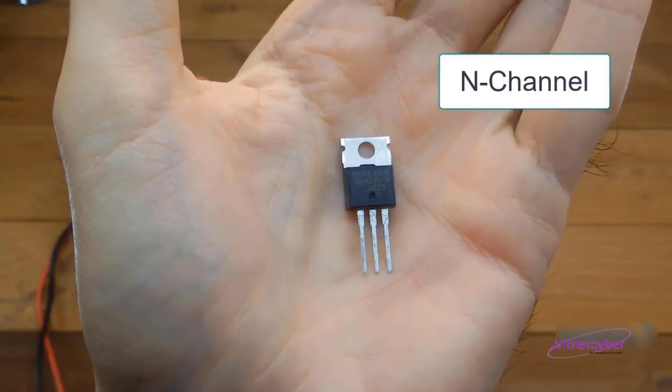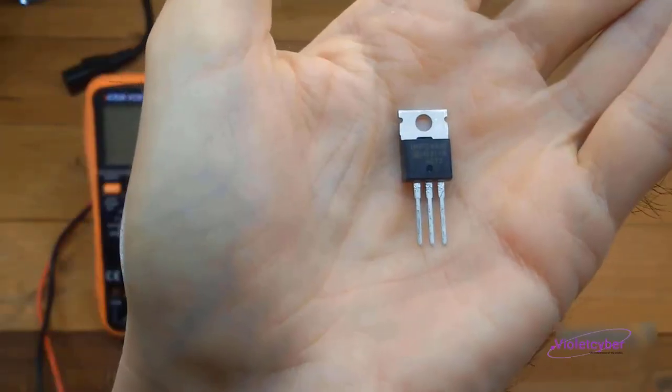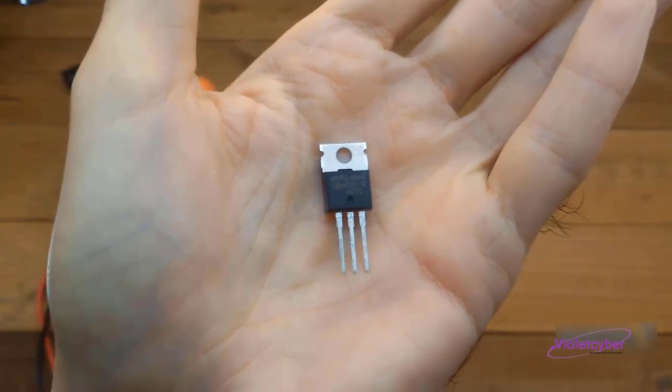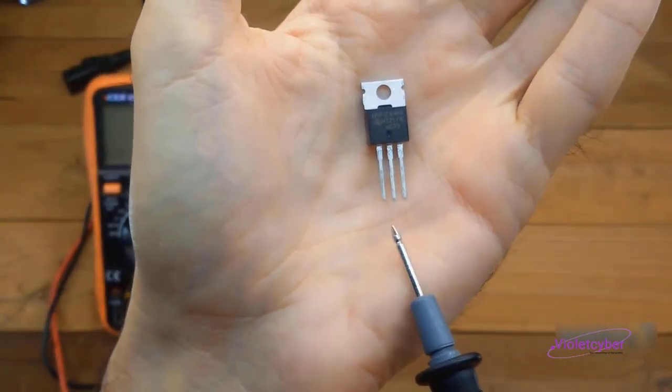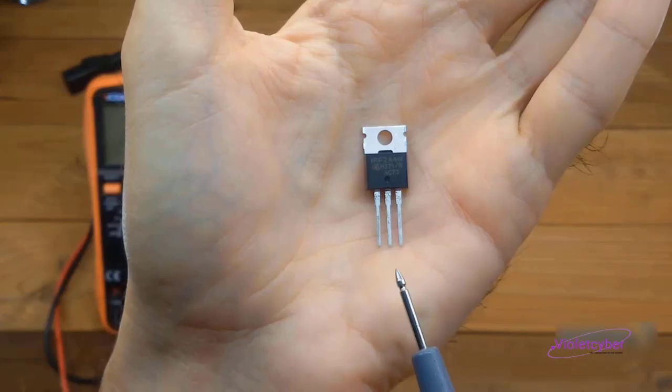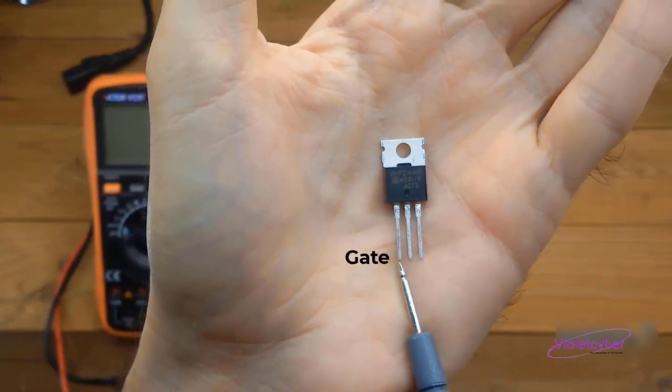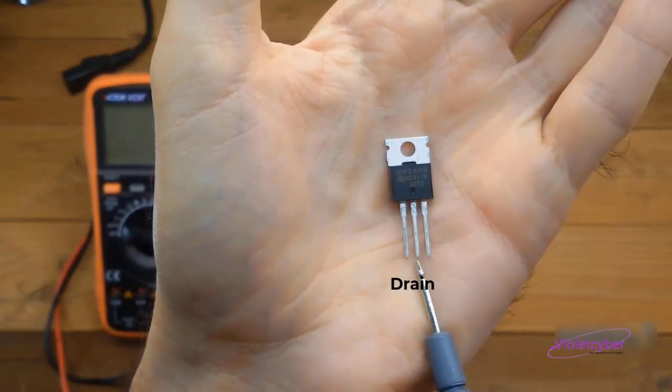The MOSFET I want to test is an n-channel MOSFET, also known as a negative MOSFET. According to the datasheet of this MOSFET, when I hold it like this, the first pin on the left is the gate, the second pin in the middle is the drain, and the third pin is the source.